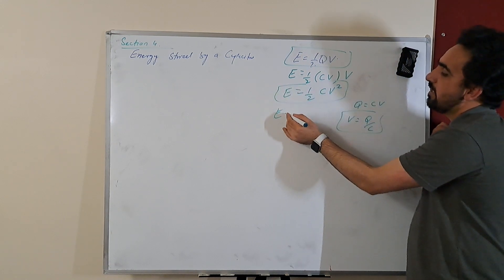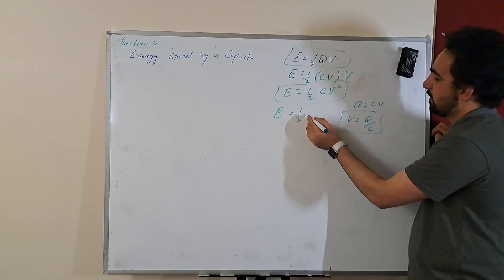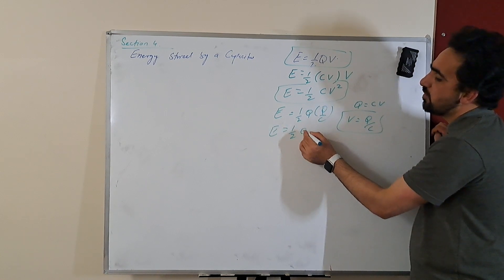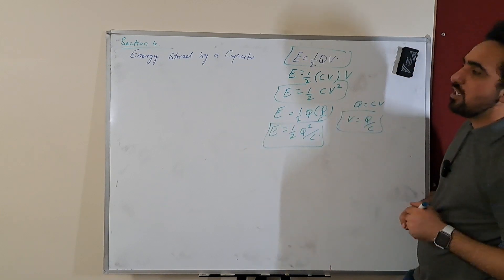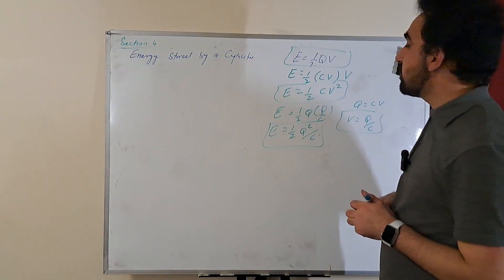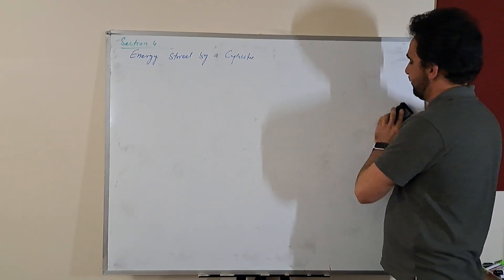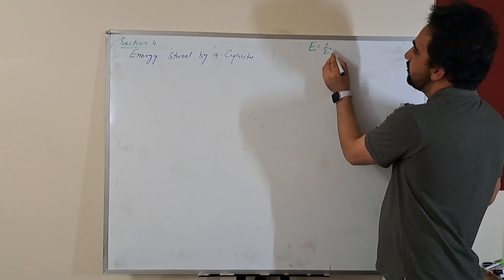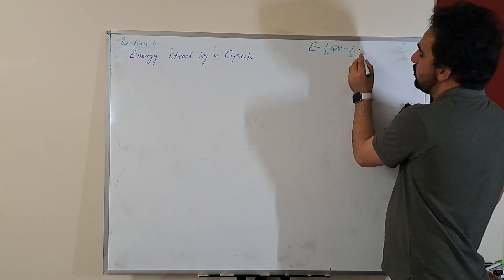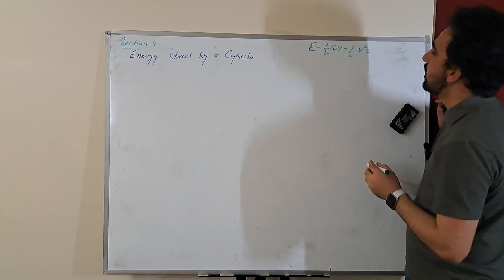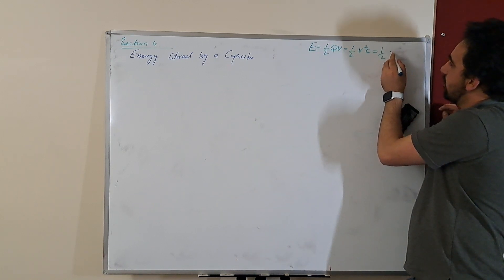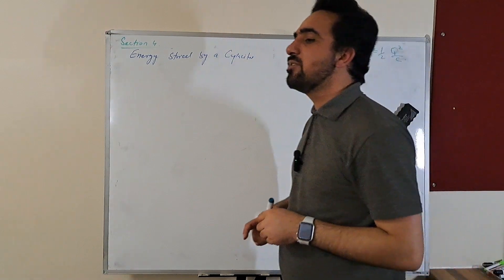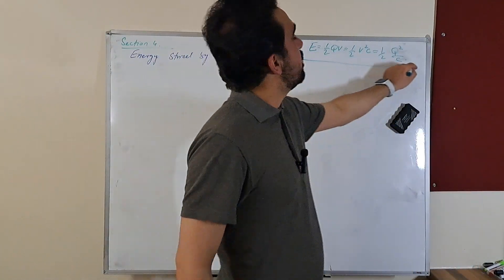This is another formula. Energy is equal to 1/2 Q, Q divided by C. So energy is equal to 1/2 Q squared divided by C. That is the third formula we can use to find the energy stored in a capacitor. So these three formulas: energy stored is equal to 1/2 QV, equal to 1/2 V squared C, and equal to 1/2 Q squared divided by C.